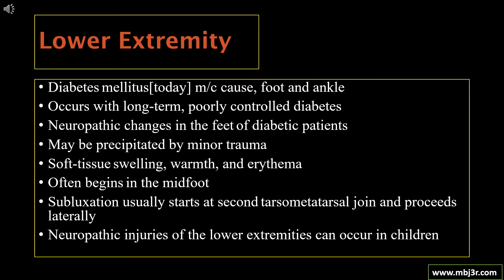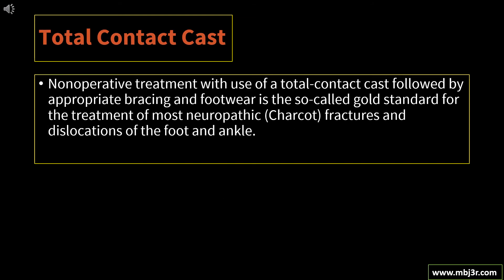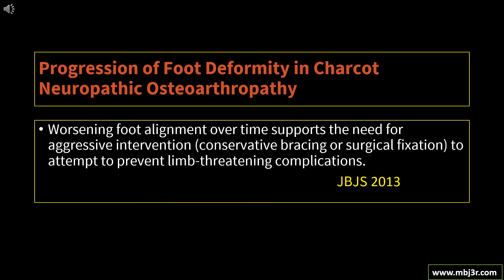Neuropathic injuries of the lower extremities can occur in children as well. Charcot arthropathy of the lower extremity is usually treated by non-operative management with a cast or brace. The gold standard for treatment of neuropathic fractures and dislocations of the foot and ankle is non-operative treatment using a total contact cast followed by proper bracing and footwear. Surgery is sometimes required but is associated with many complications. Worsening foot alignment supports the need for aggressive intervention — either conservative bracing or surgical fixation — to prevent limb-threatening complications such as pressure sores and infection.